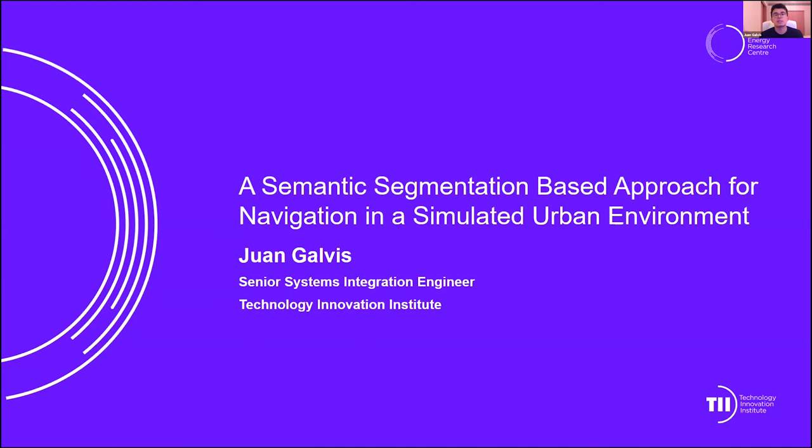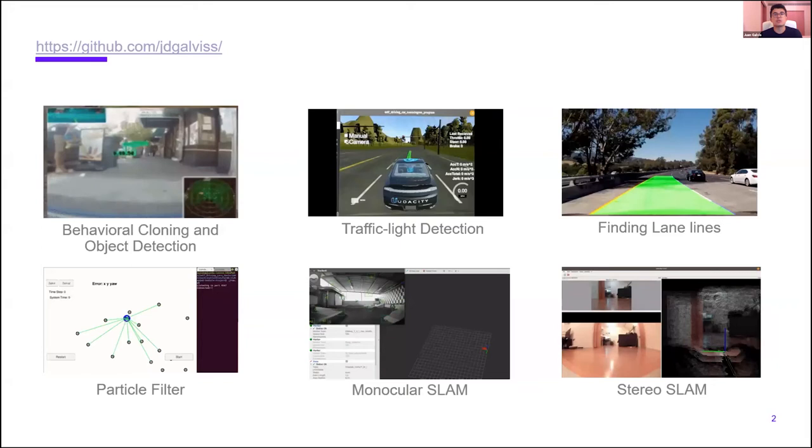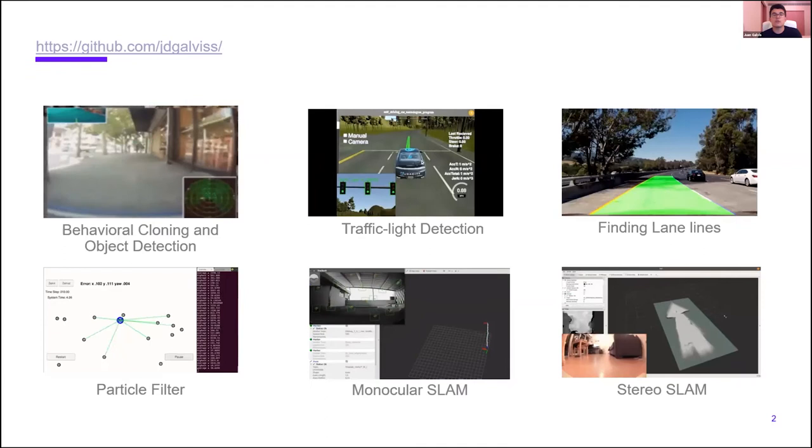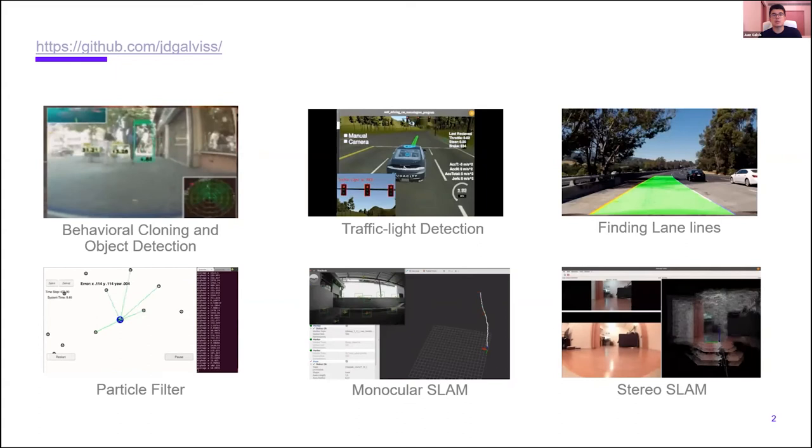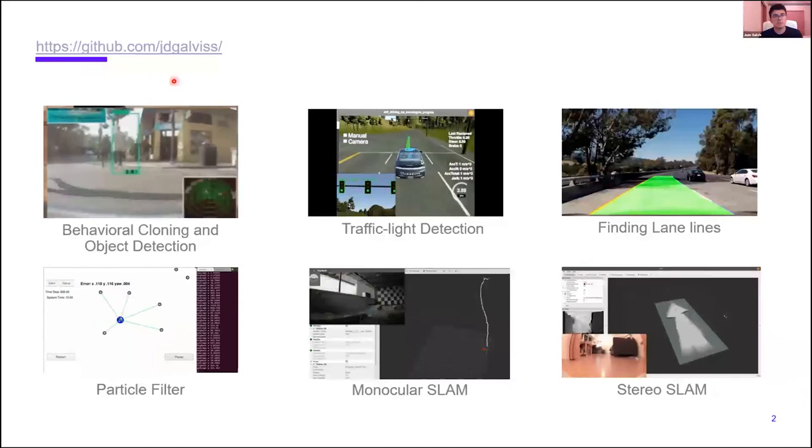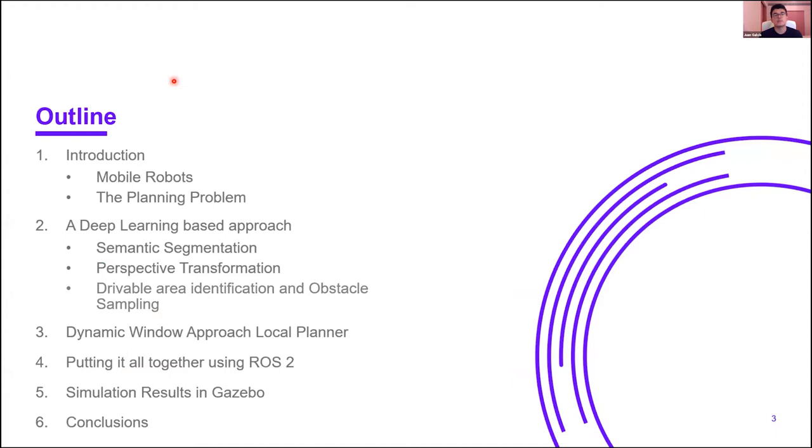My name is Juan Galvis and I am a systems integration engineer at the Directed Energy Research Center, where I have been working on projects related to signal and image processing, deep learning, and embedded systems. In addition to that, I have experience in robotics. Over the last years I have worked on a wide range of projects in this field, particularly for ground vehicles and self-driving vehicles, both in industry and academia. Some of these projects have been made publicly available on GitHub.